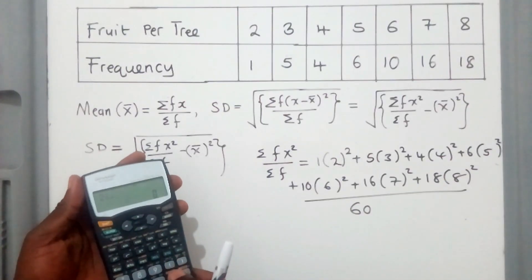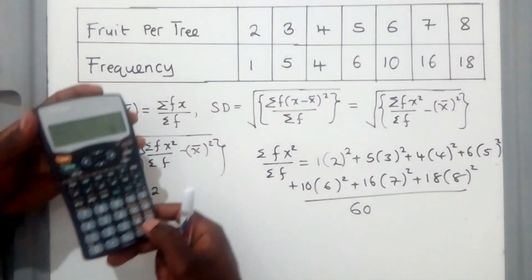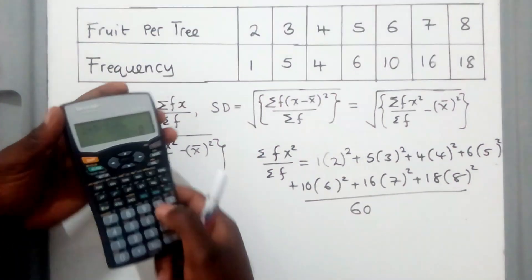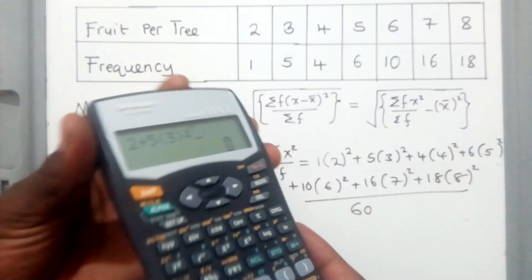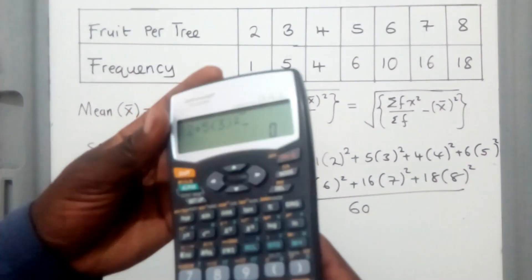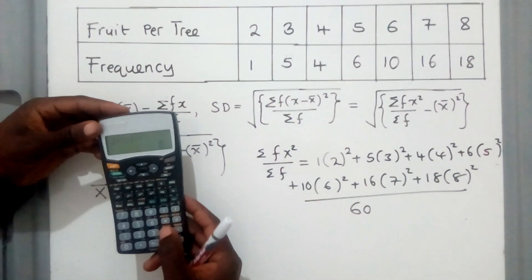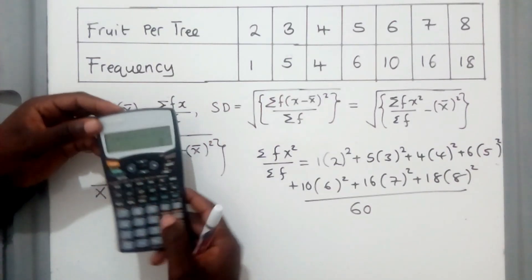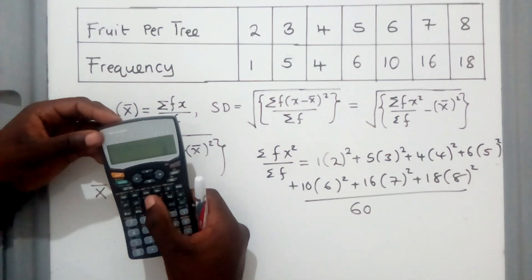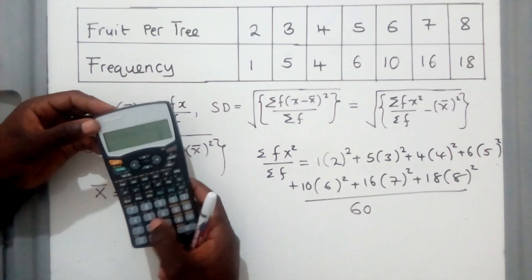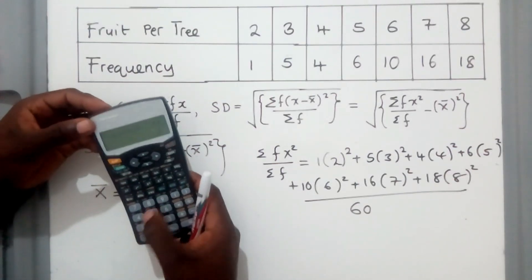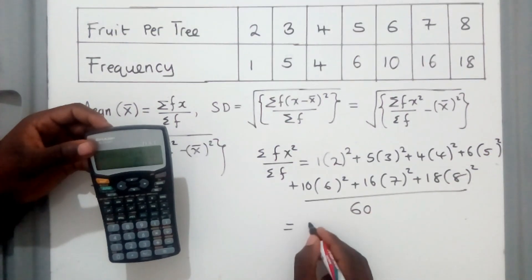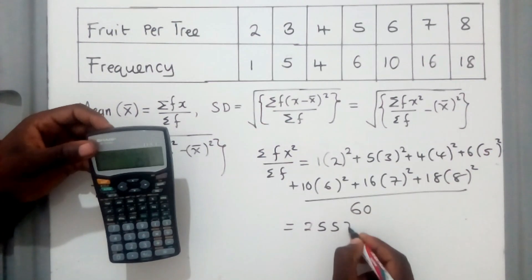Punching on the calculator: 2 squared plus 5 times 3 squared, plus 4 times 4 squared, plus 6 times 5 squared, plus 10 times 6 squared, plus 16 times 7 squared, plus 18 times 8 squared. This gives us 2557 over 60.